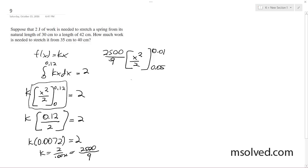All right, so then what we end up with here is 2500 over 9 times one-half because I pulled out the one-half from the integral, so we get 0.1 squared minus 0.05 squared.